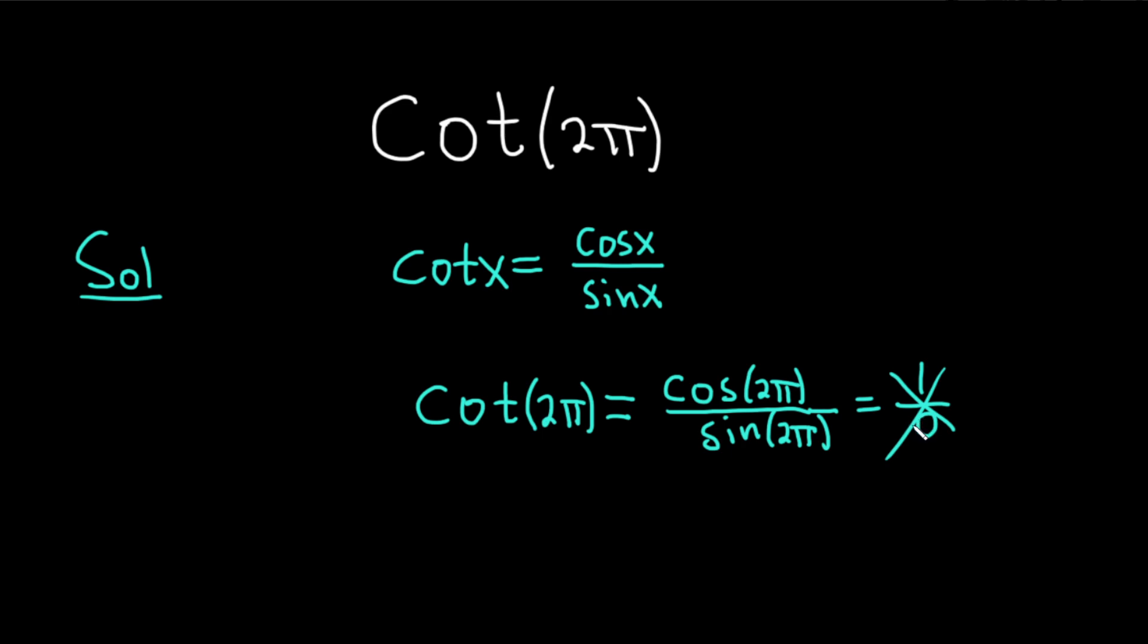So this is an undefined thing. We can't do anything with it. So cotangent of 2π, we say it's undefined. So that is the answer.